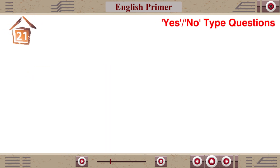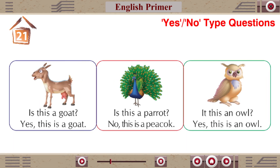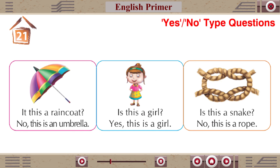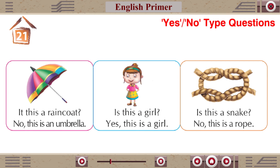Chapter 21: Yes or No type questions. Is this a goat? Yes, this is a goat. Is this a parrot? No, this is a peacock. Is this an owl? Yes, this is an owl. Is this a raincoat? No, this is an umbrella. Is this a girl? Yes, this is a girl. Is this a snake? No, this is a rope. Is this a giraffe? Yes, this is a giraffe.